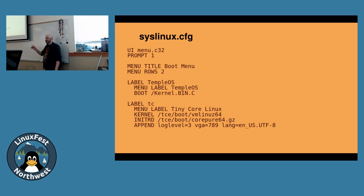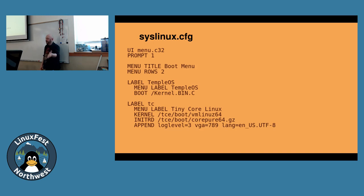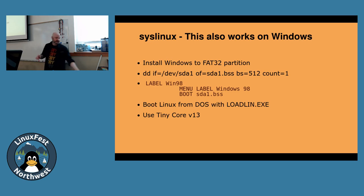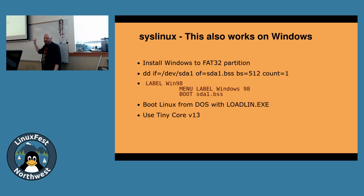You'll notice the byte size of this DD command is 440, not 512 — the other 72 bytes are your partition table, and you don't want to mess with that. Then you run syslinux -i on your partition and it works. This is syslinux.cfg — if you're going to take one photograph of any slide, it should probably be this one, because there's a lot of trial and error that went into this. All it's saying is: give me a boot menu, give me two options — one called TempleOS, one called TinyCore. If I pick TempleOS, just boot kernel /boot/kernel.bin.c. If I'm booting Linux, I give it the path to the kernel, the path to the RAM disk, and append some kernel arguments. This also works on Windows — I've tested this with FAT32-capable Windows versions.